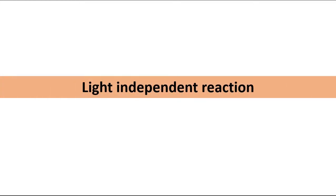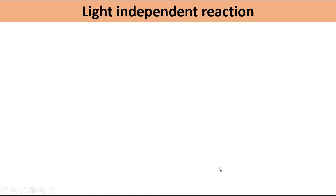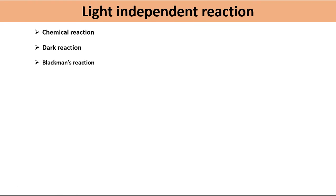In this video we will talk about light independent reaction. Light independent reaction is also known as chemical reaction, dark reaction, Blackman's reaction, carbon reduction cycle or C3 cycle or Calvin cycle, and reductive pentose phosphate pathway.